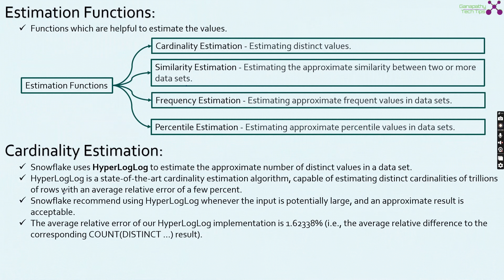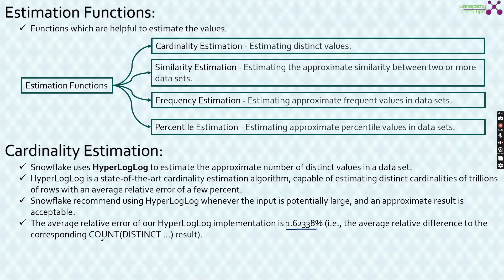Snowflake recommends using HyperLogLog whenever the inputs are potentially large and an approximate result is acceptable. This function will return approximated results only, not the exact result. If you have a very large table and you are acceptable with a minimal error, you can utilize these HyperLogLog functions. The average relative error of the HyperLogLog implementation is 1.62338%, which is the average relative difference to the corresponding COUNT DISTINCT result. There is always a relative error when using this type of estimation.